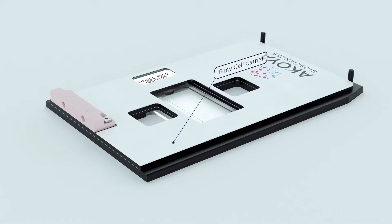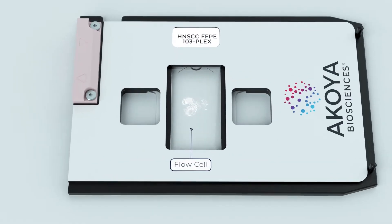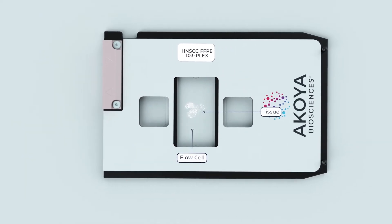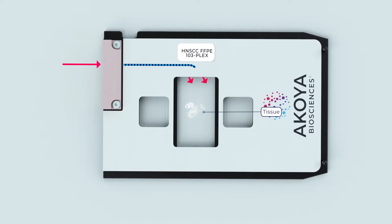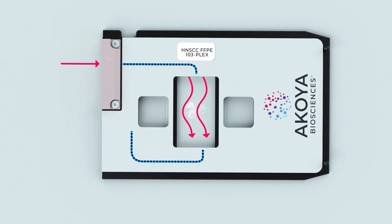To label the tissue prior to each scanning cycle, the PhenoCycler delivers the barcoded reporters through a uniquely designed flow cell. The flow cell allows for staining on whole slides.